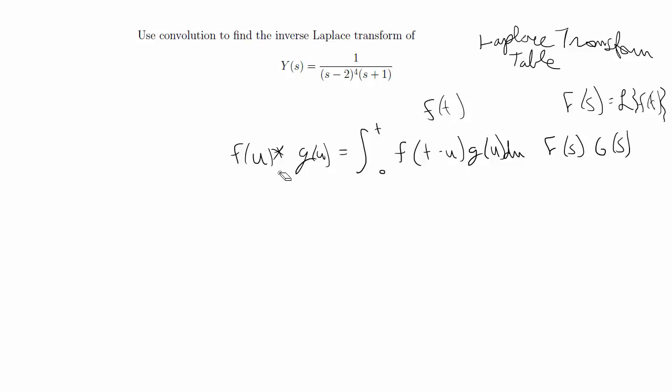The way a convolution is usually written is f asterisk g equal to the integral of 0 to t, and then the multiple of two functions where one function is reversed and shifted, so that's f(t-u) in this case. The Laplace transform of this is capital F(s) capital G(s).